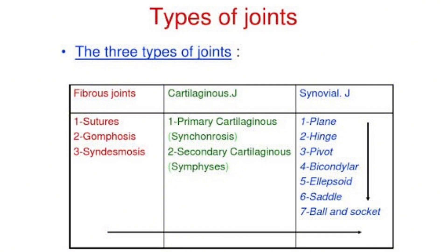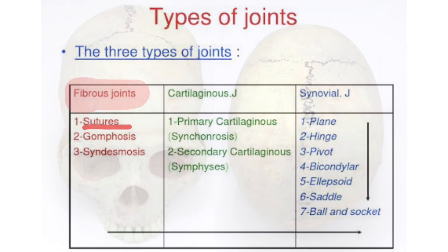We have three types of joints in the human skeletal system. The first type are the fibrous joints. We have three sites where fibrous joints exist, and we will explain each type in detail. The first type of fibrous joints are sutures.